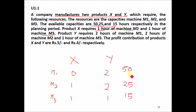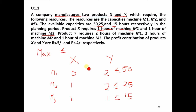We write: 0X + 2Y ≤ 50. Since the problem involves profit, we need to maximize it — making this a maximization problem. For maximization problems, the constraint type is less than or equal to. So we write: 0X + 2Y ≤ 50; 1X + 2Y ≤ 25; 1X + 1Y ≤ 15.